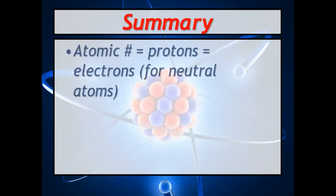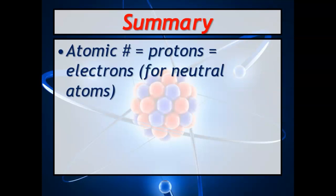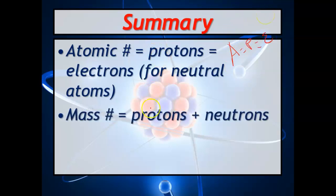So, summary: atomic number equals protons equals electrons (APE, A = P = E). Mass equals protons plus neutrons, so you can even do M equals A plus N, or it can be M minus A equals N.